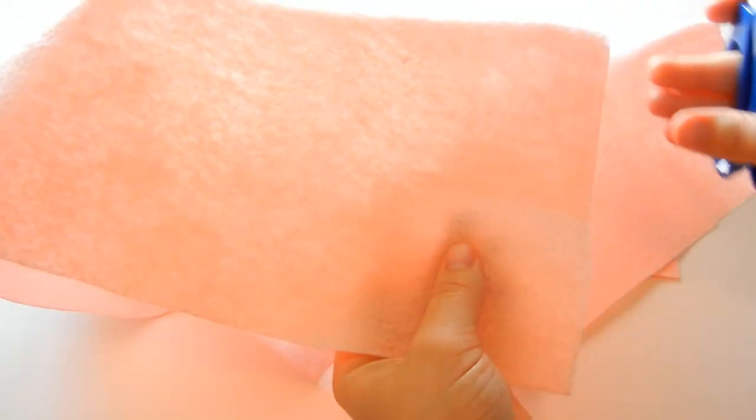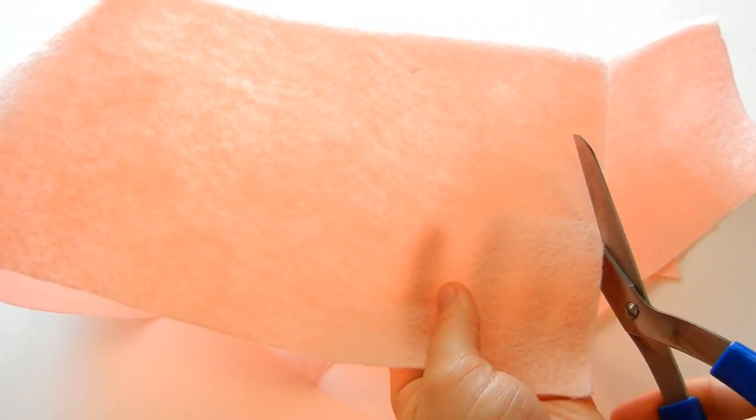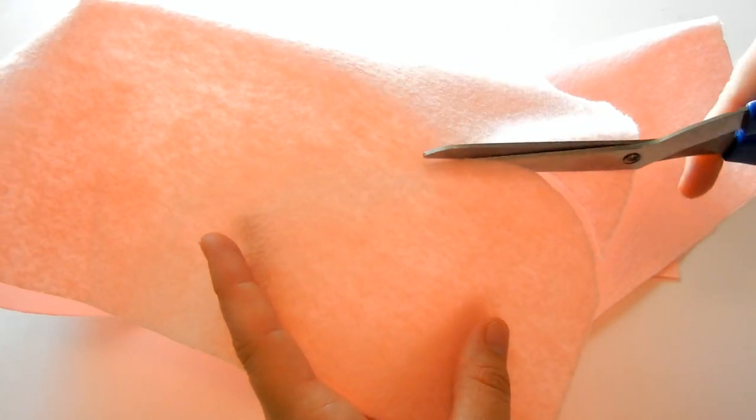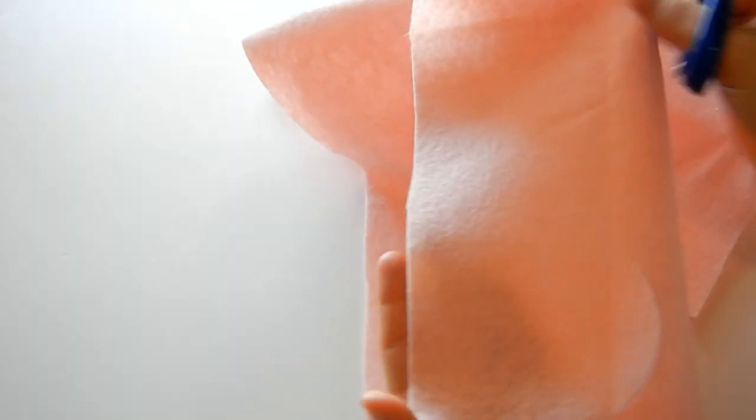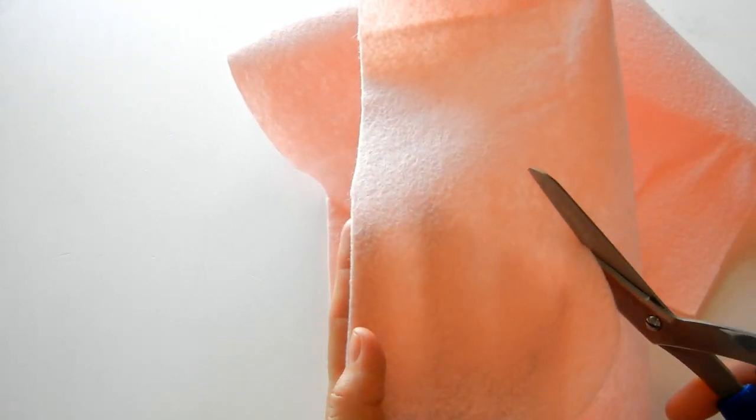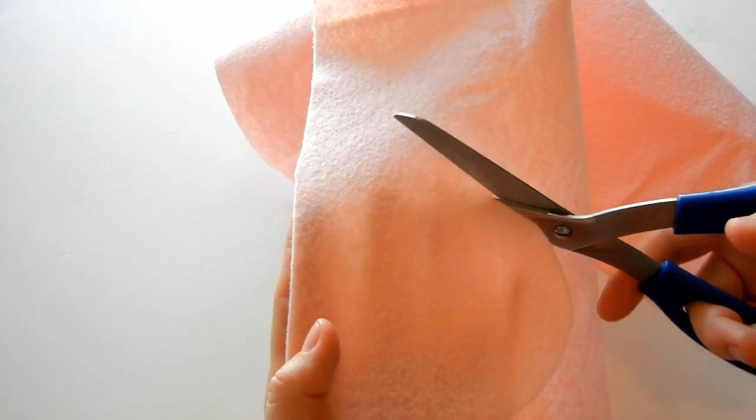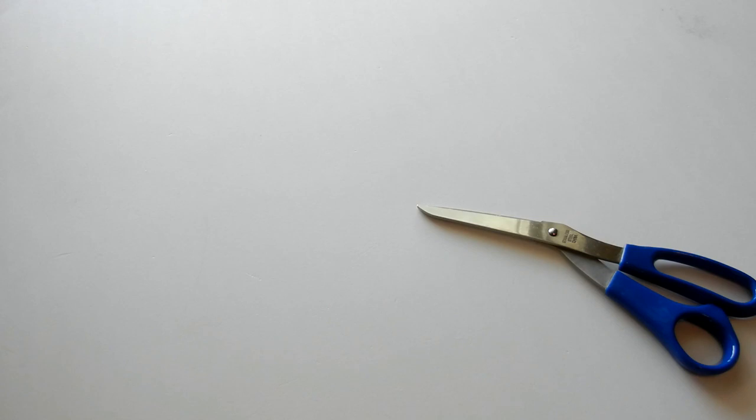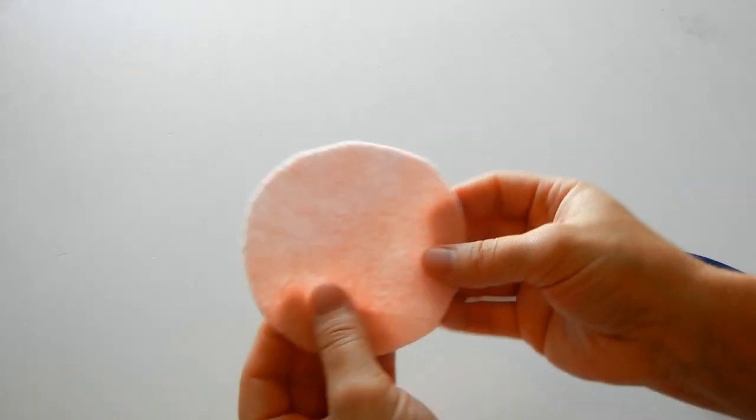The first thing you want to do is take your felt and cut a circle. The bigger the circle, the bigger the flower. You can use a template for this, like a bowl or a cup. Here is my circle, it's about four inches.